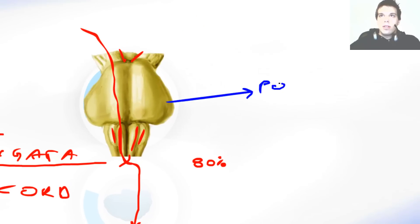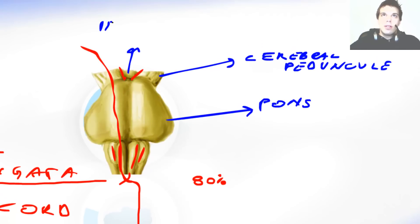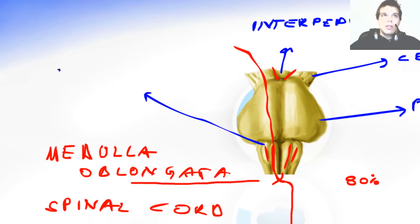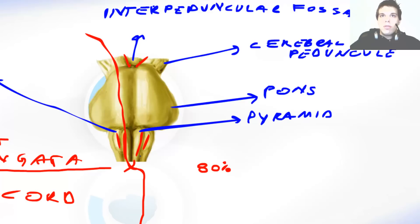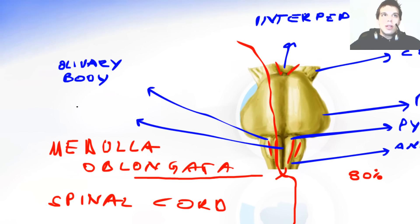Let's write this all down. This was the pons. This was the cerebral peduncle. This was the interpeduncular fossa. Then we had the olivary body. We had the pyramids. We had the anterolateral sulcus here, and the anterior median sulcus here.